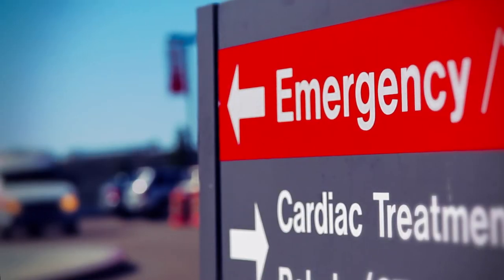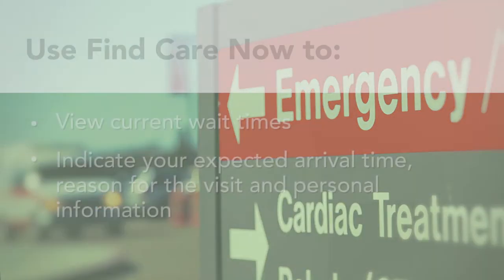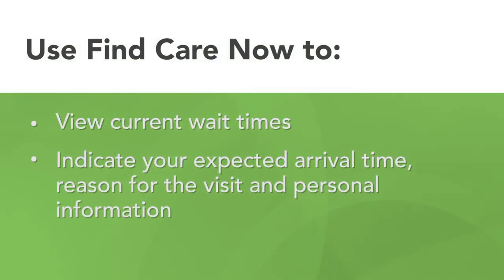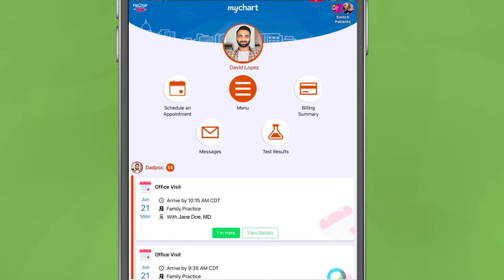Need to visit our emergency room? Use Find Care Now to view current wait times and help us prepare for your visit by indicating your expected arrival time, reason for the visit, and personal information. Find Care Now is accessible from our website homepage and from MyChart. In this video, we'll show you the steps for using Find Care Now in MyChart.